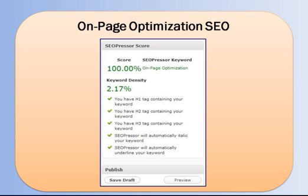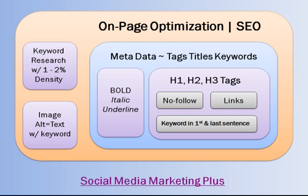To summarize: do good keyword research, maintain one to two percent keyword density, add alt text for images, bold, italicize, and underline your keywords, include H1, H2, and H3 tags with your keyword, use nofollow on external links, include an internal link to a relevant page on your site, and put your keyword in your first and last sentence. When Google bots crawl and index your site, they'll see a well-structured article — and that's how you get ranked on page one of Google. That's part one. In part two, I'll do all of this for you in real time.